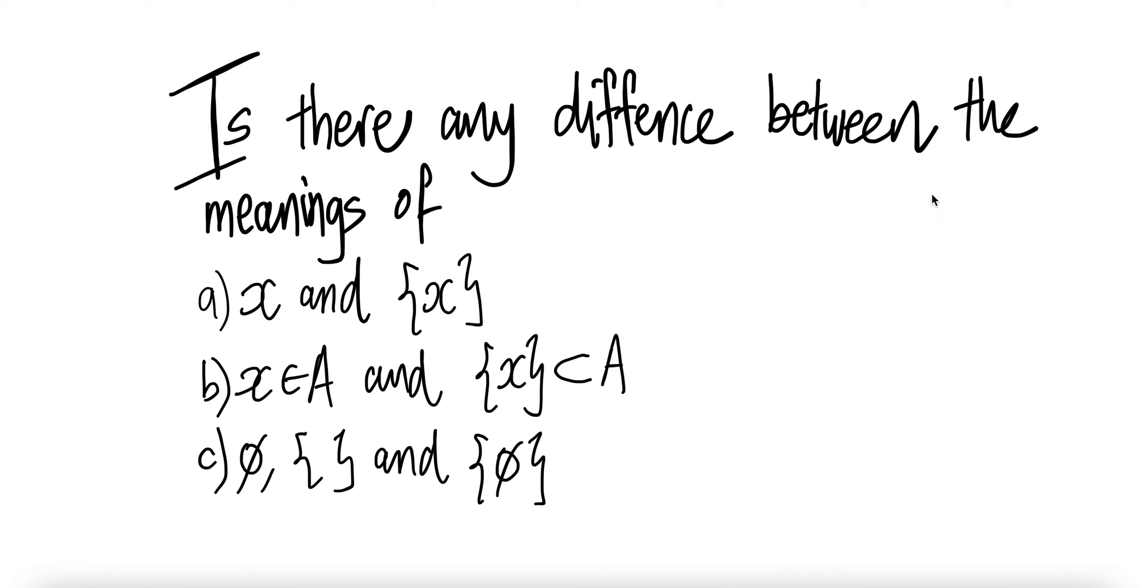Is there any difference between the meanings of: a) x and {x}, b) x∈A and {x}⊆A, c) ∅, { }, and {∅}?